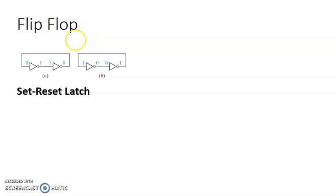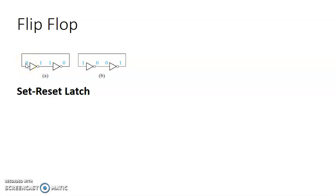So how can we construct this flip-flop? NOR gates are used, given with two inverters connected back to back. The first inverter — if the input is 0, I will be getting the output as 1. This output will be fed as an input for the second inverter. Since this input is 1, the output of the second inverter is 0.